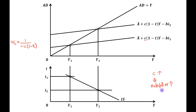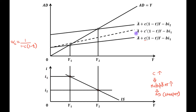With the increase in the value of the multiplier, the AD curve will become steeper. You can see this steeper AD curve at interest rate I1. The only difference between this AD curve and the original one is that here we have written C and here we have written C', where C' is greater than C. The equilibrium point for this AD curve will be this one, and this is the equilibrium level of output OY1 dash.